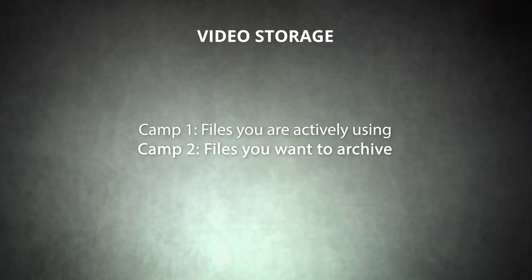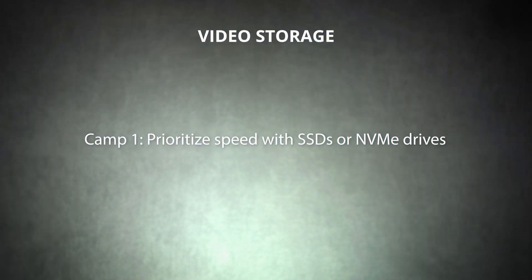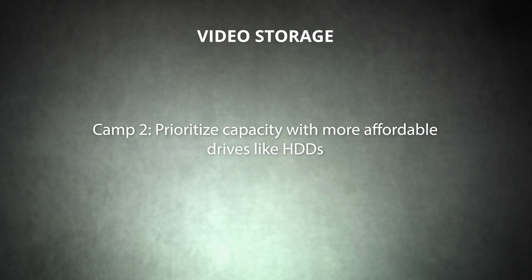Now, let's take a look at your storage options for your video files. Video files will generally fall into two camps: the video files you're working with on your current project, and the video files you want to save in an archive. When you're editing, your computer is reading data, so you'll need to prioritize read speeds — SSDs and NVMe drives are good choices. For archive storage, speed is less important. The goal is to keep a lot of data safe for a long time, and you won't be editing those files directly, so you can choose a less expensive HDD if you wish, though SSDs are a good option as well.